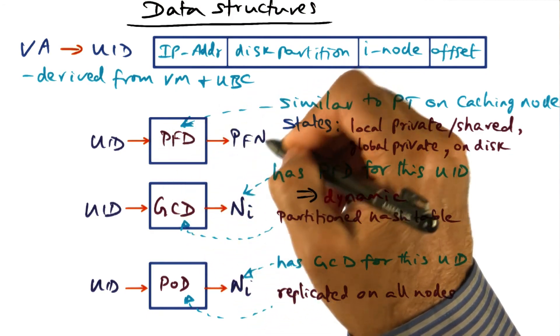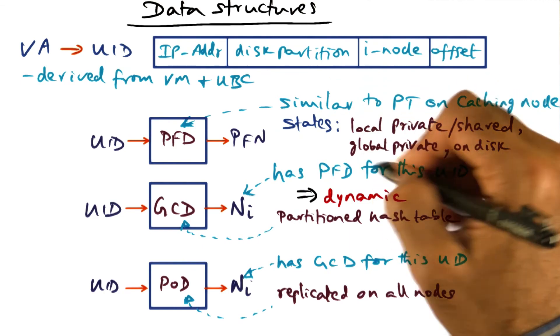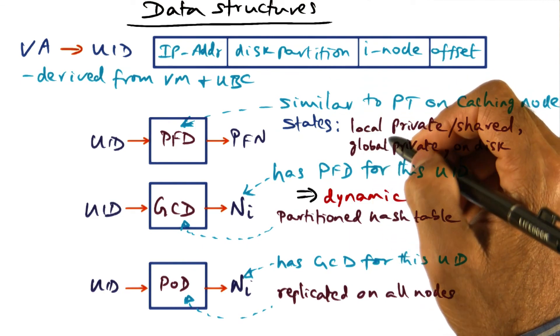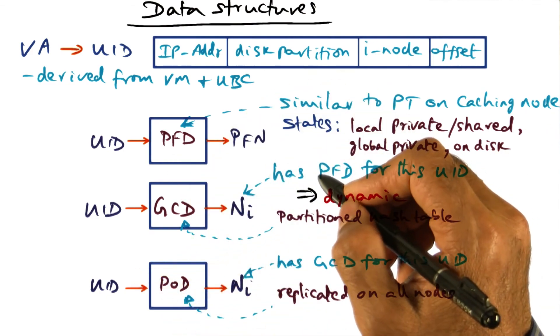Then I can go to that PFD, and from that PFD, I can get the page that I'm looking for, which might be in that node, or it might say, well, it's not in my node anymore, it's on the disk. So this is the path for page fault handling.